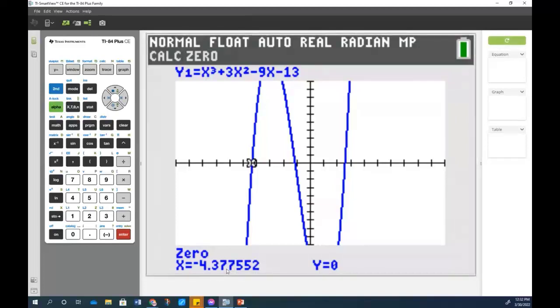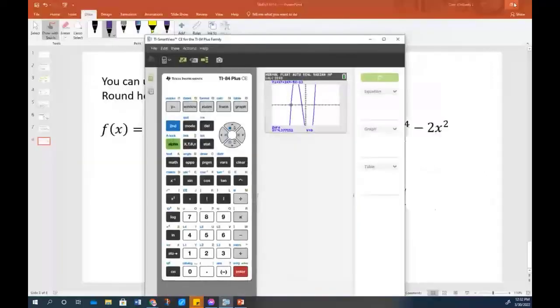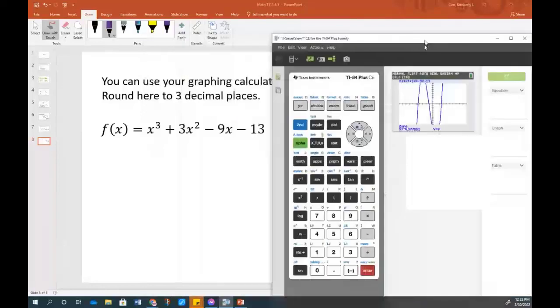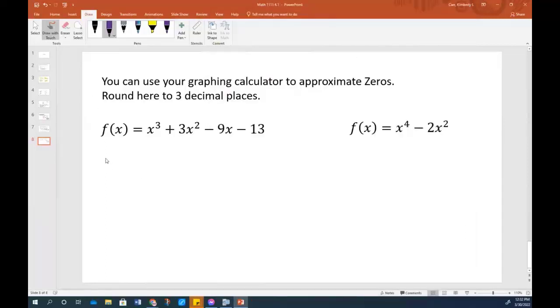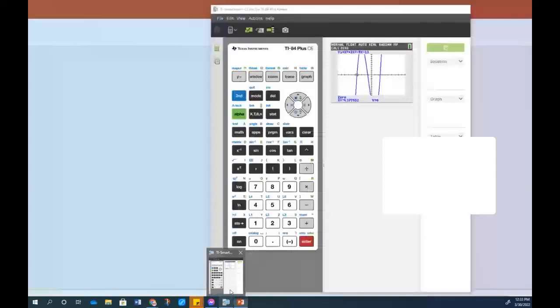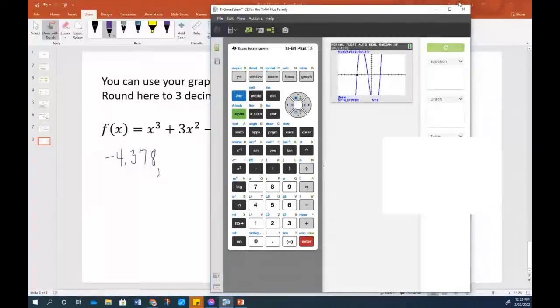And notice it tells me that the zero is at negative 4.377552. So now let's break this back down a little bit. And it says to three decimal places. So that's going to be negative 4.378. And that is the left most one. And as I recall, I think your homework asked you to list them from least to greatest or starting with the zero on the left. So I've done that. But now I need to find my next zero.